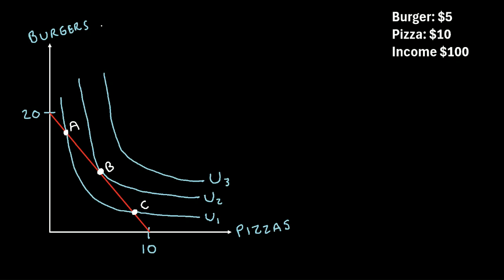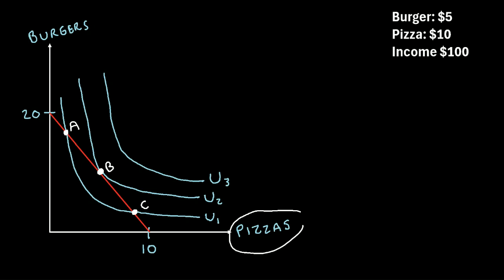Now if we were to create a graph of these two goods with burgers on the y-axis and pizzas on the x-axis, I've drawn three indifference curves here, which I've labeled U1, U2, and U3. Each point on each of these individual indifference curves represents a combination of burgers and pizzas that would give you the same level of satisfaction.